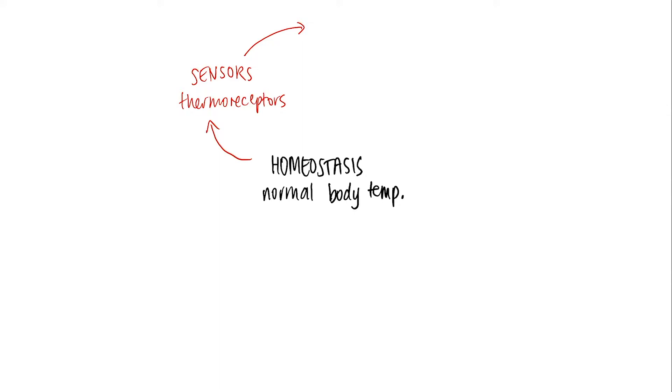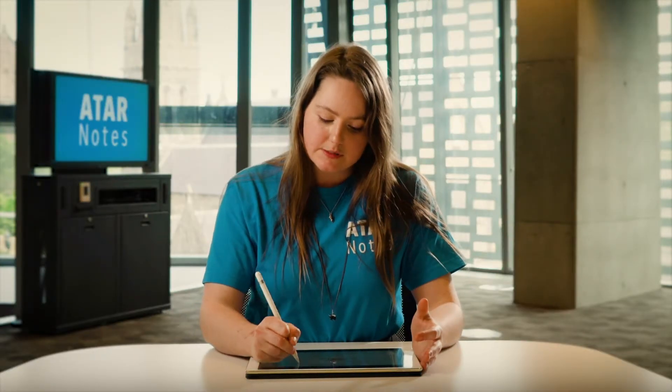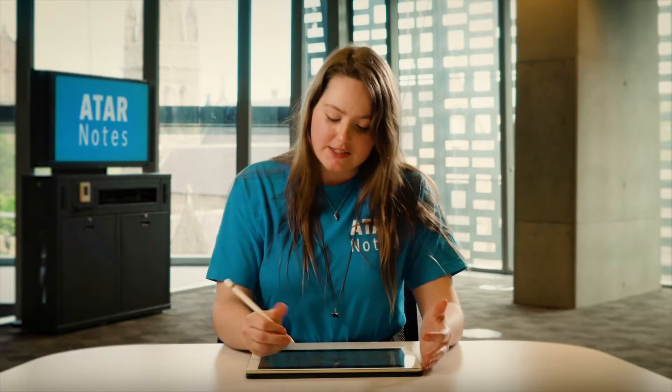This change is passed from your sensors through the nervous system to your control centre which is in your brain, the central nervous system. In this case we're talking specifically about the hypothalamus, which computes this change and then enacts responses through effectors.